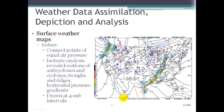On this surface weather map you can see there's some radar overlaid, so we can see that the precipitation in this case is right along this frontal boundary. You can see the surface fronts have been drawn in — the cold fronts, warm fronts, stationary fronts, and occluded fronts that we talked about in a previous chapter.